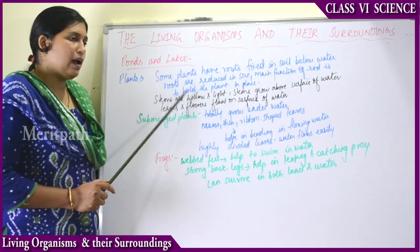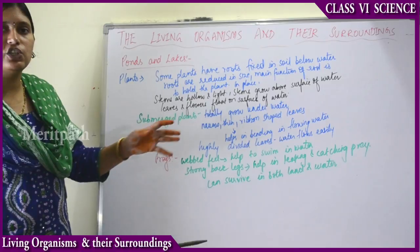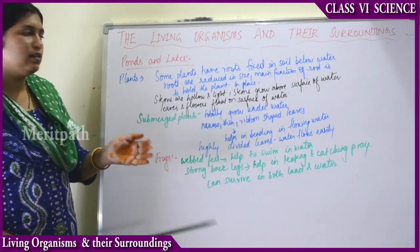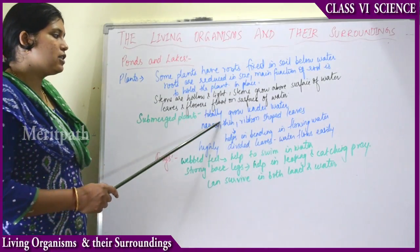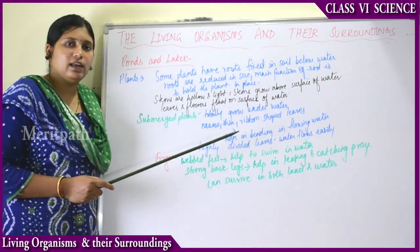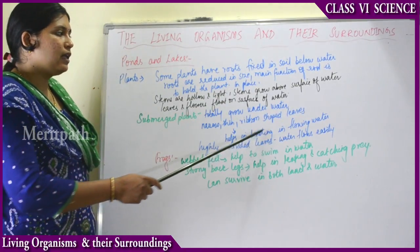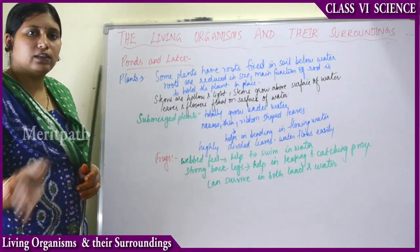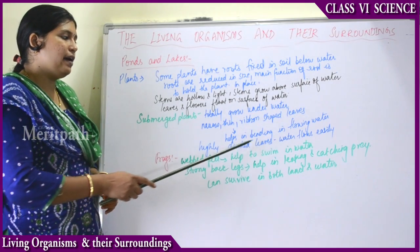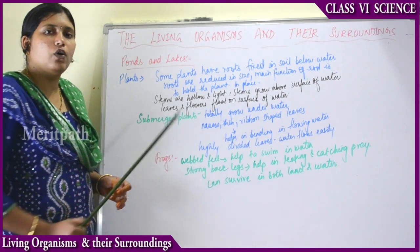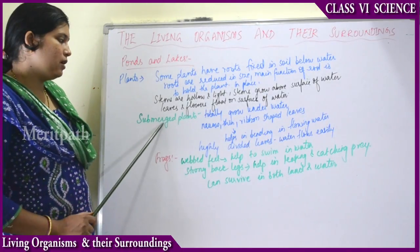That covers plants which grow above the surface. Then there are plants which are completely submerged — totally under the water. In these plants, the leaves are very narrow, thin, and ribbon-shaped. These leaves help in bending when water flows at great speed, allowing them to withstand the flow. Highly divided leaves also help water to flow easily through them.